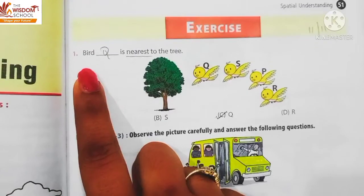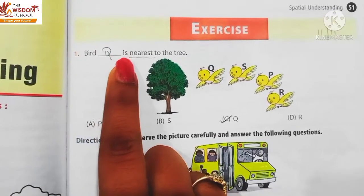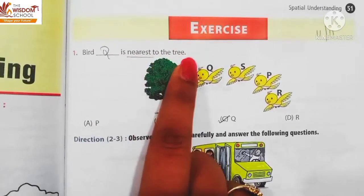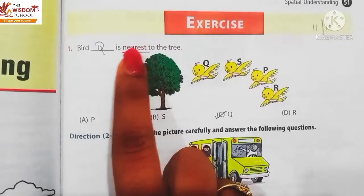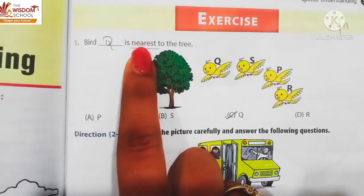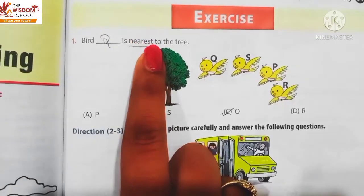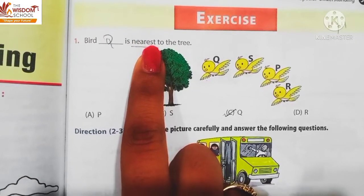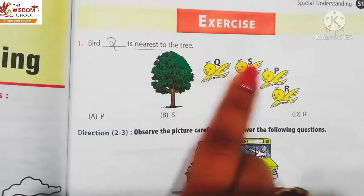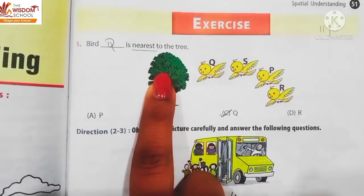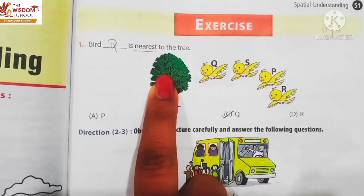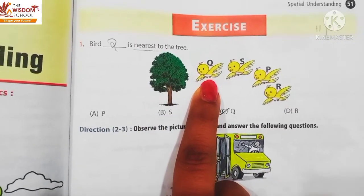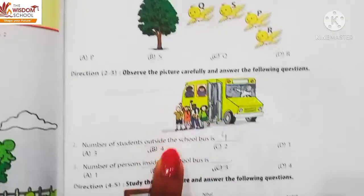First question: Bird dash is nearest to the tree. Near ka matlab hota hai paas, and nearest ka matlab hai sab se paas. Kaunsa bird hai jo tree ke sab se paas mein hai? That is bird Q.